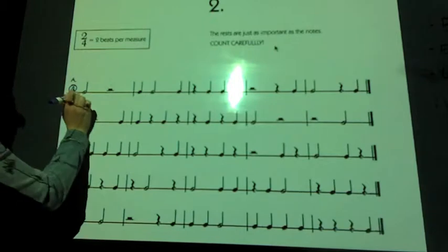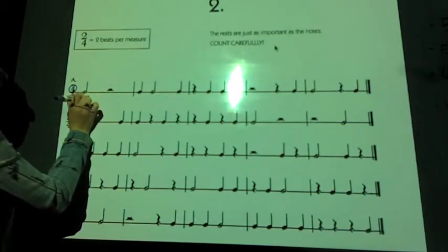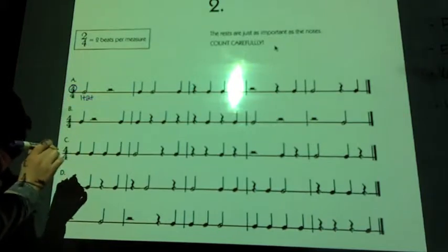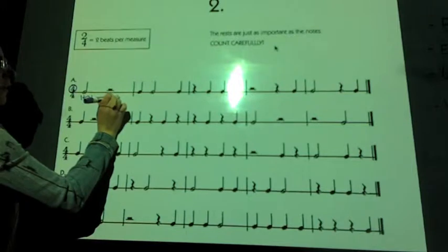Here we have a half note. It receives two beats, so we use two numbers. One and, two and. A half rest, also two numbers. Three and, four and.